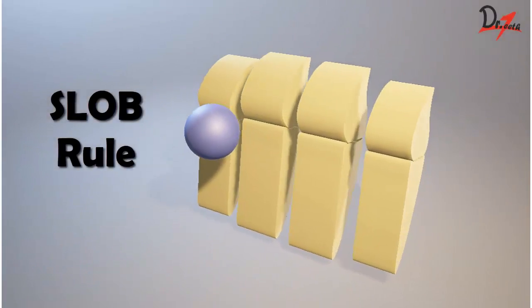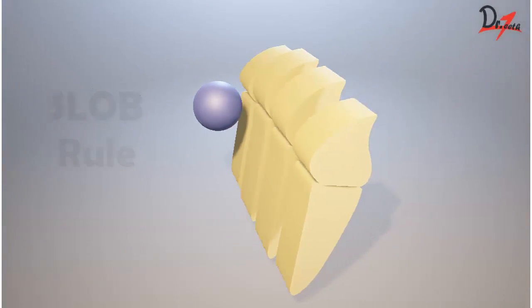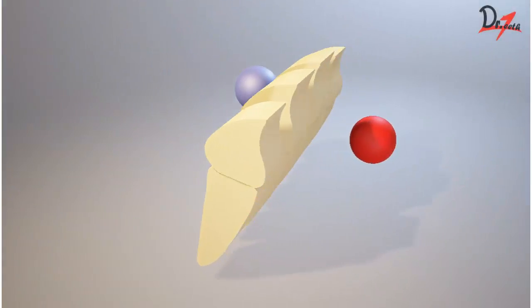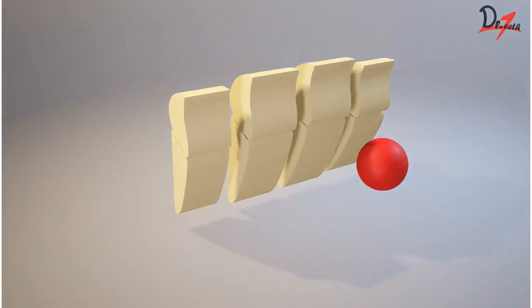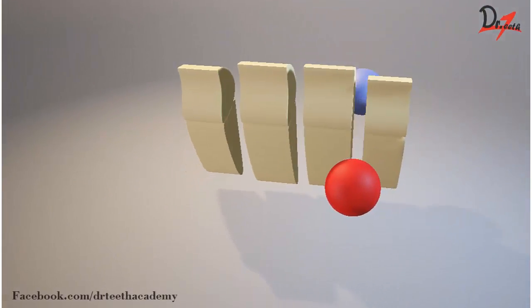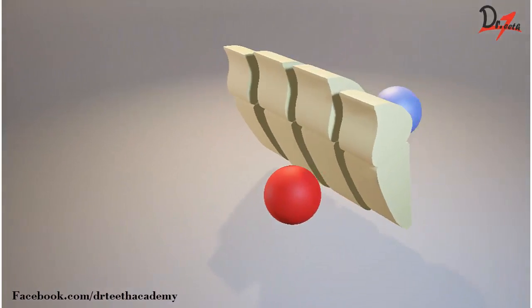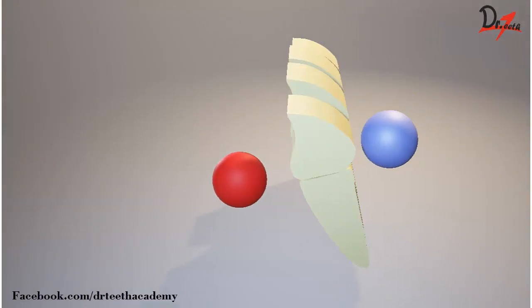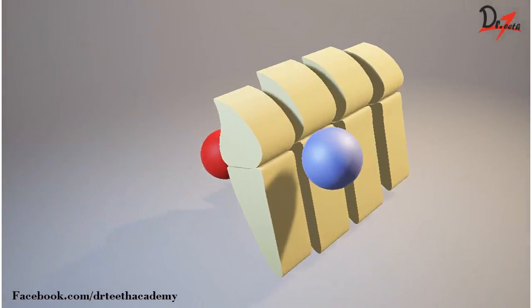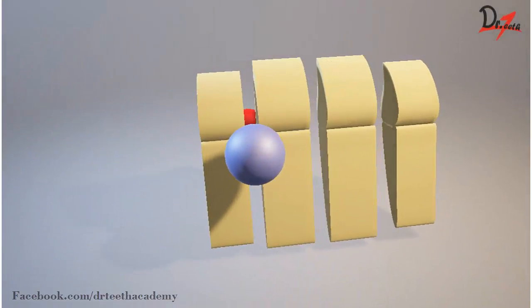Whenever we are taking a dental radiograph, we are actually taking a two-dimensional picture of a three-dimensional object. In that case, if we have to locate the exact location of something, let's say foreign bodies, impacted teeth, retained root, or jaw fracture, we have to follow some methods for that.